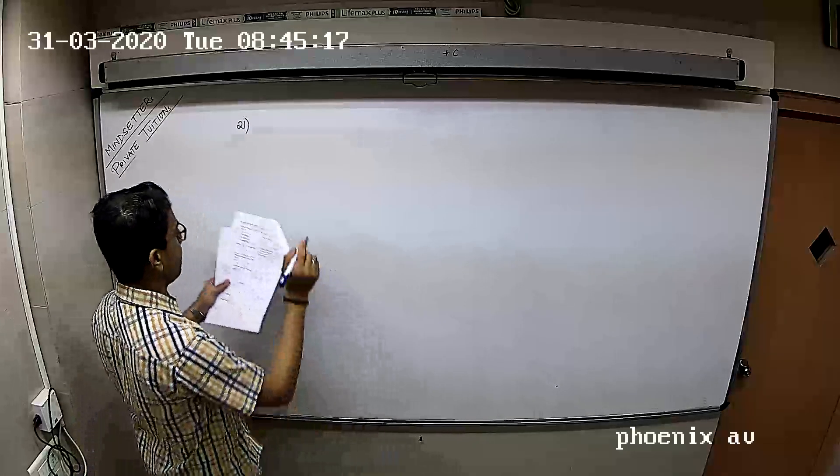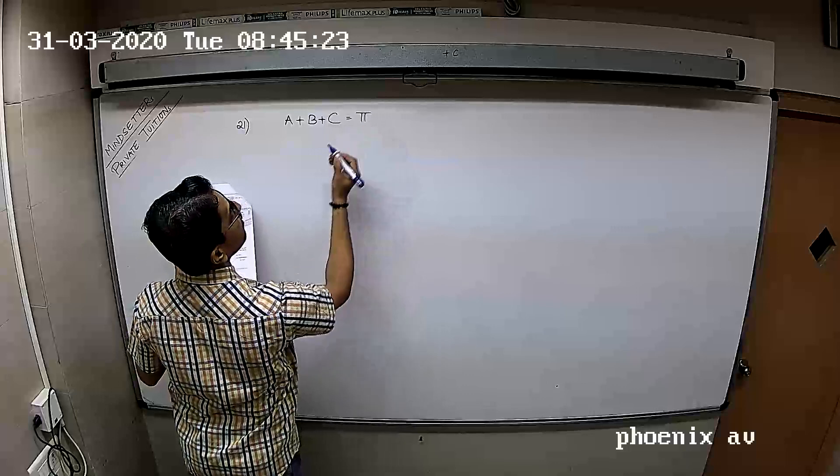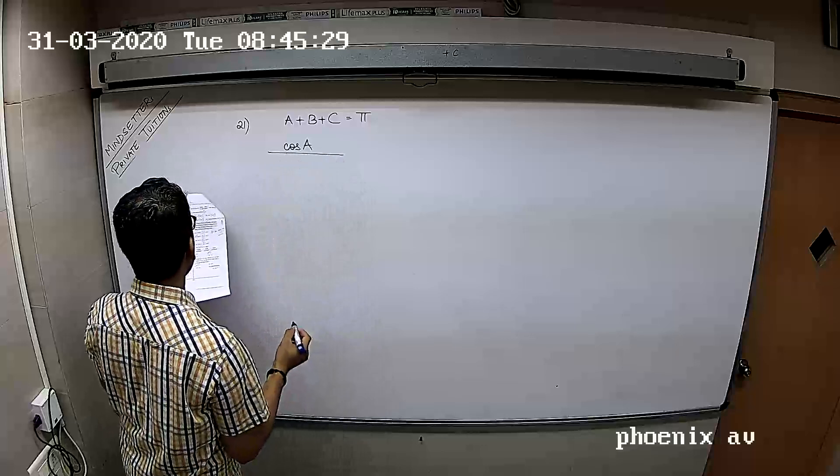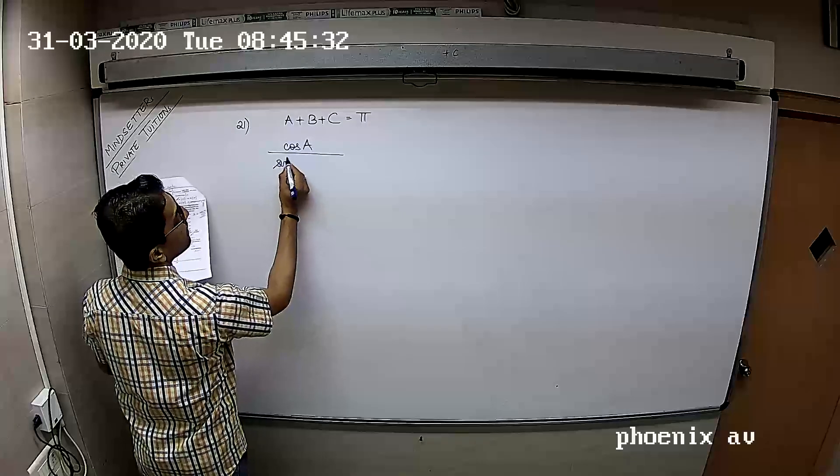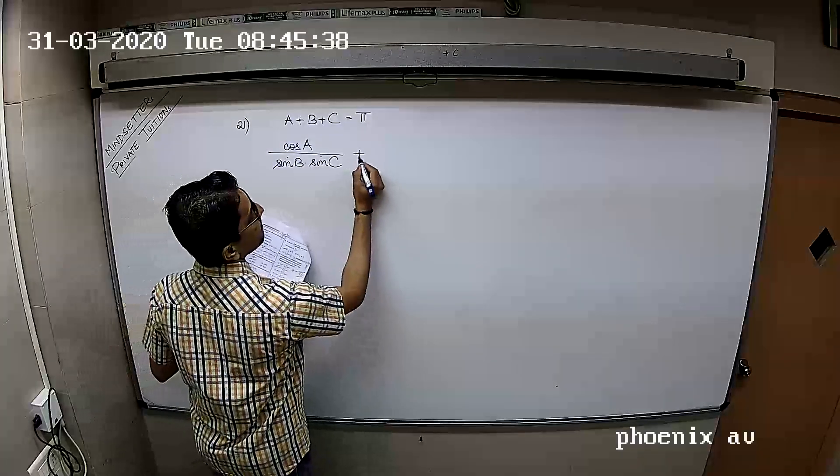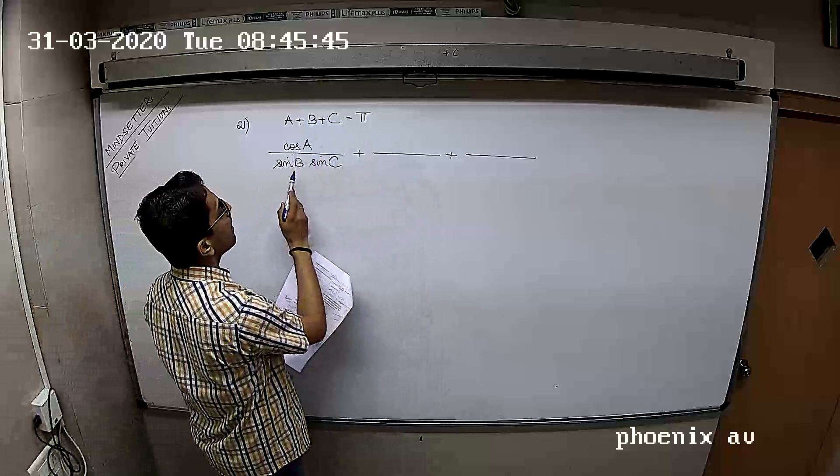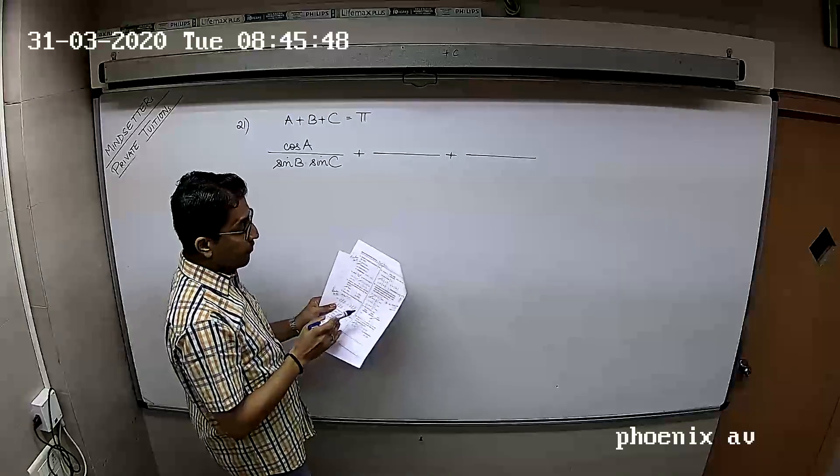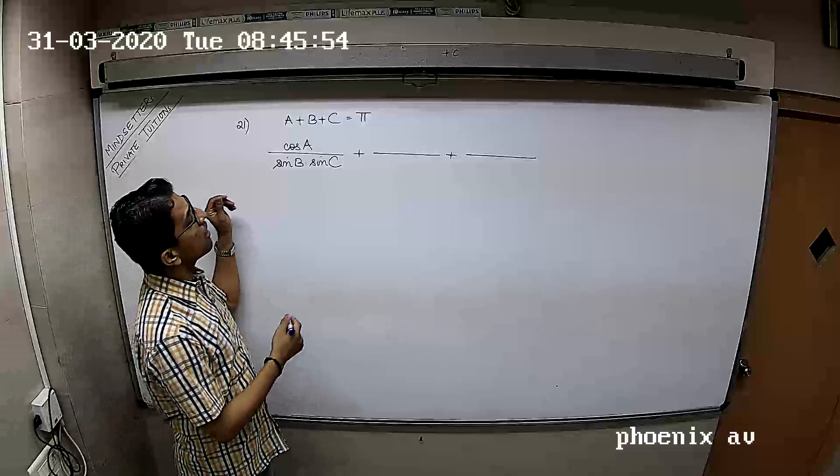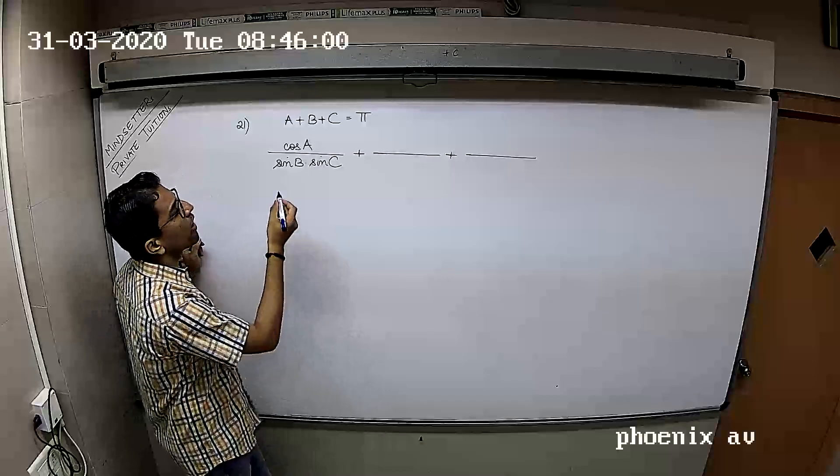Question 21: We are given A plus B plus C is pi, cos A upon sin B into sin C plus cos B upon sin C into sin A plus cos C upon sin A into sin B. This is kind of a cyclic thing, so A will become B then C and A, that's the next term, and then further.